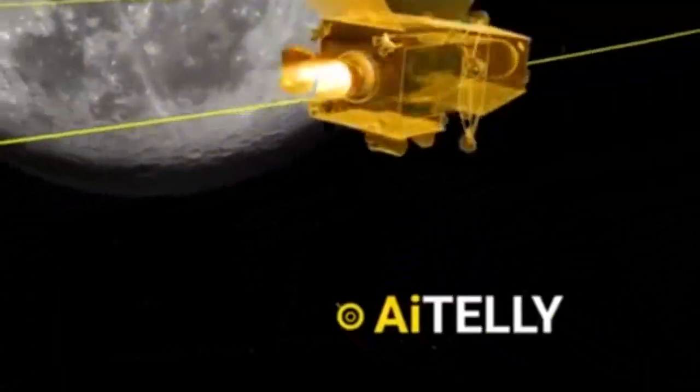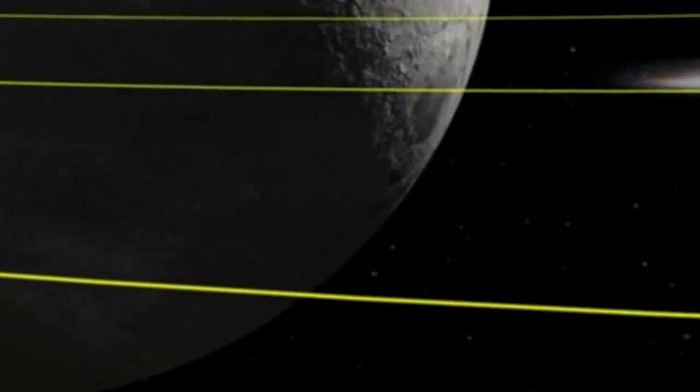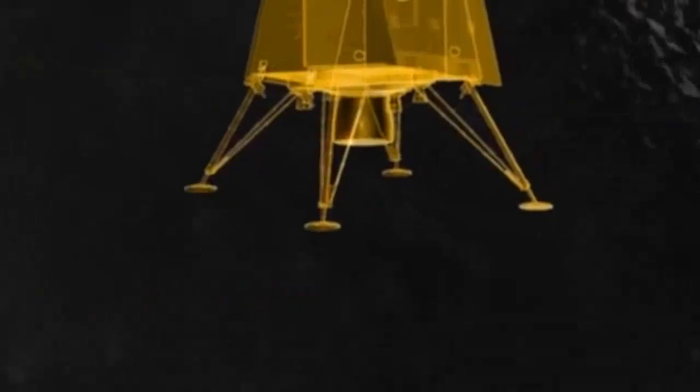Step number eight, Lander will separate from the orbiter. Step number nine, even after detaching, the lunar orbiter will still be working, scanning the lunar surface for possible landing operations.